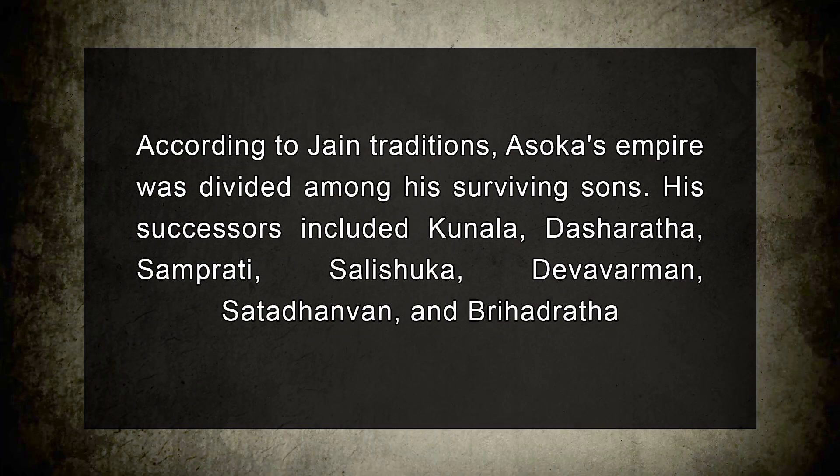Since the Puranic genealogy is ambiguous, it is challenging to determine how many successors to Ashoka ruled. According to Jain tradition, Ashoka's empire was divided among his surviving sons. His successors included Kunala, Dasharatha, Samprati, Salisuka, Devavarman, Satadhanvan, and Brihadratha. Romila Thapar argues that it is possible for the empire to have been divided between two post-Ashokan monarchs based on later Buddhist chronicles, which might have represented the empire's declining strength.